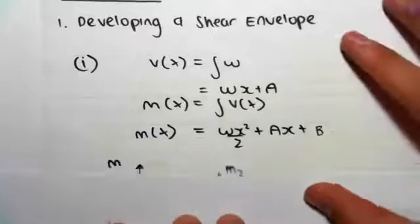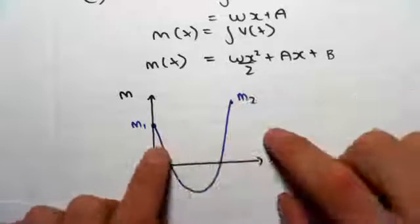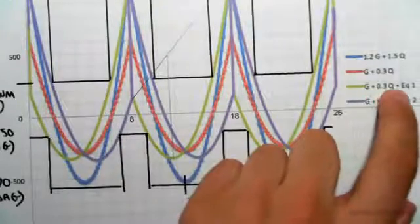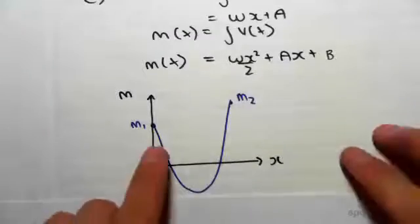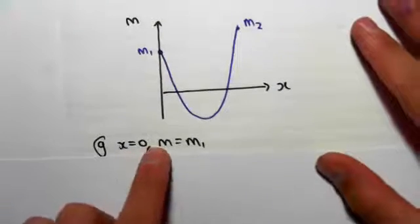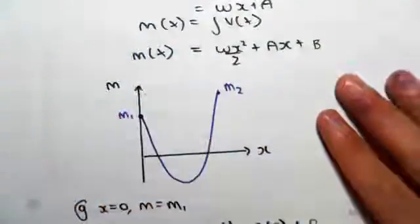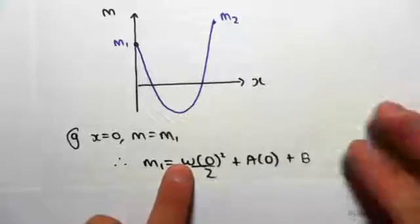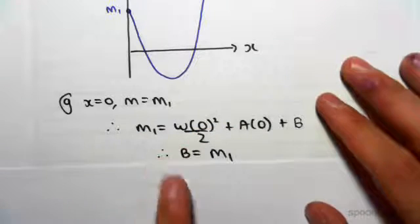Let's say we have a moment diagram with moment against x, with moment M1 and moment M2 — different moments at different points. In our case, for example, the G plus 0.3Q plus earthquake load combination starts at one value and ends at another. So at x equals 0, the moment equals M1. Substituting that boundary condition into the formula, we get M1 = w·(0)²/2 + A·(0) + B, which gives us B equals M1. The next boundary condition is when x equals L.